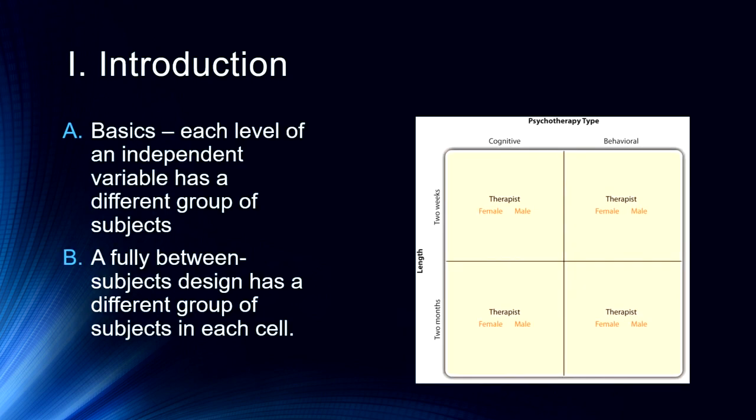As we start to get more complicated, and in our next lecture we're going to talk about complex designs, we might refer to what I call a fully between subjects design versus a mixed design. In the fully between subjects design we'll have two independent variables in this kind of complex design, where we have length of psychotherapy and psychotherapy type as our two independent variables. And we have four different groups in this, and in fact we might actually now have a third independent variable in here, but let's focus on just this two by two.